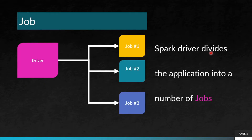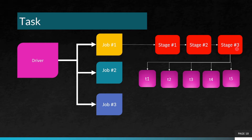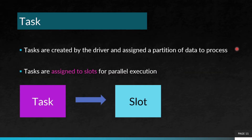A job: the Spark driver divides the application into a number of jobs, as depicted in this figure. The jobs are further divided into a number of stages, and each stage is divided into a number of tasks. Tasks are created by the driver and assigned a partition of data to process. Tasks are assigned to slots for parallel execution.